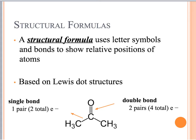We'll start with a new type of formula called a structural formula. Just what it sounds like, a structural formula shows you the structure of the bond. You use letters and symbols to show bonds and the position of the atoms. So not only are you showing double bond, triple bond, single bond, but you're also showing where those bonds are. As a result, you get a general shape of the molecule, and the shape of the molecule can actually have a big impact on its properties.